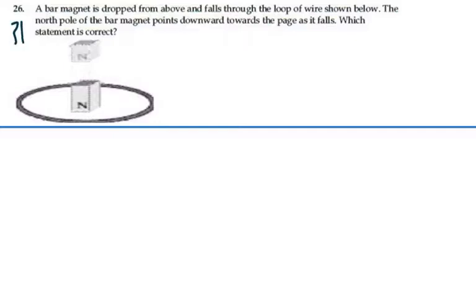Here's problem 3126. A bar magnet is dropped from above and falls through the loop of wire shown below. The north pole of the bar magnet points downward towards the page as it falls. Which statement is correct?